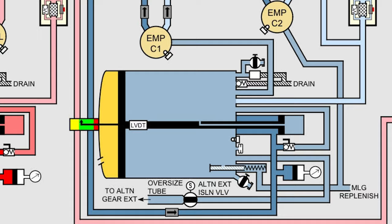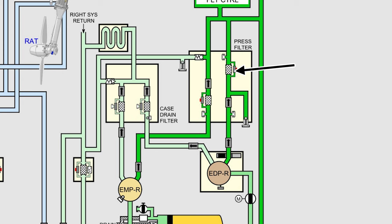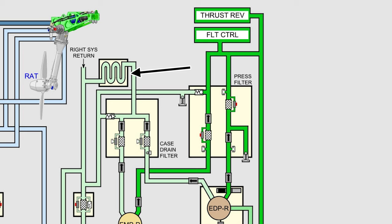There are five filters per hydraulic system: an EDP pressure filter, an EMP pressure filter, an EDP case drain filter, and an EMP case drain filter. Just before the reservoir in the return line is the return filter. There is a heat exchanger in the main tanks that cools down the case drain hydraulic fluid and warms the fuel.